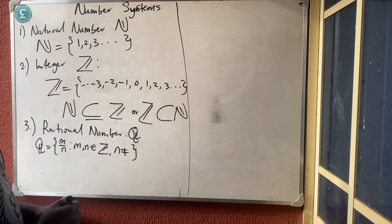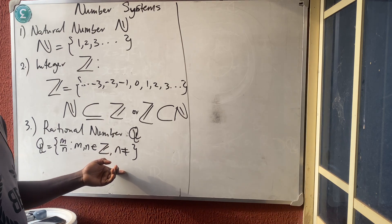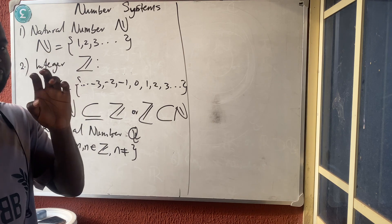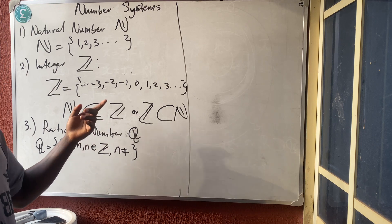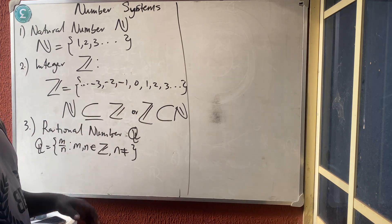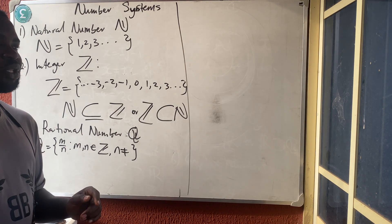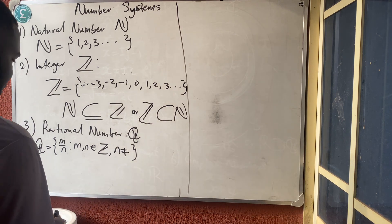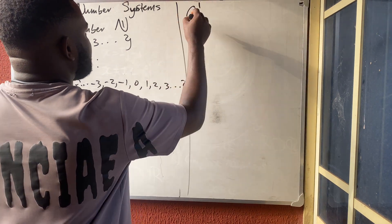With this definition you can see that every integer is a rational number, because if I put any whole number over 1, it is now in fraction form. But not every rational number is an integer — because 1/2 is not an integer, but 1/2 is a rational number. The denominator cannot be zero because if the denominator is zero, it is undefined.